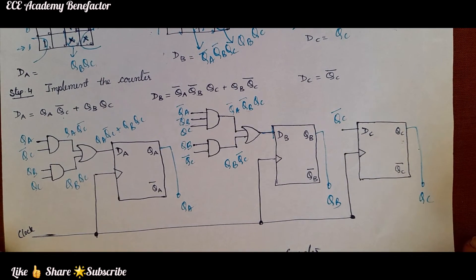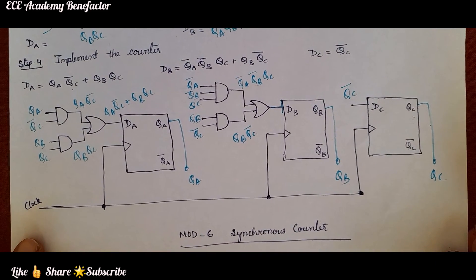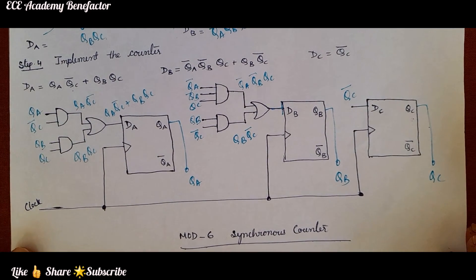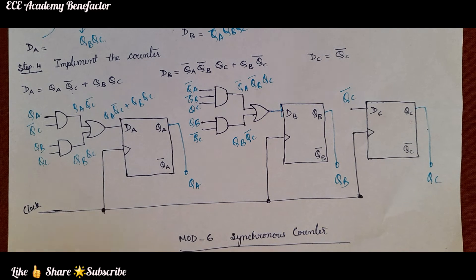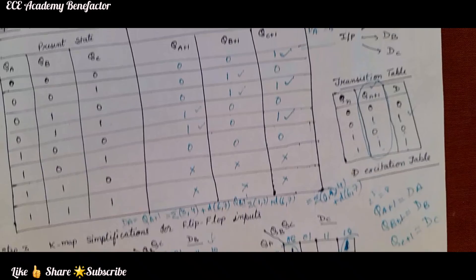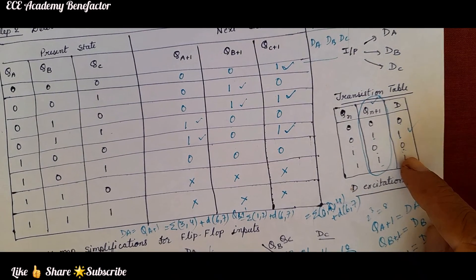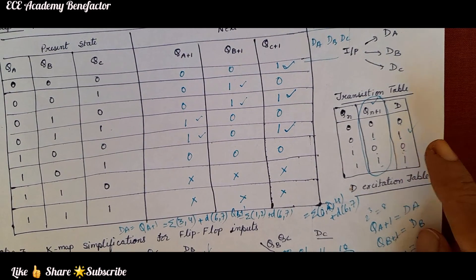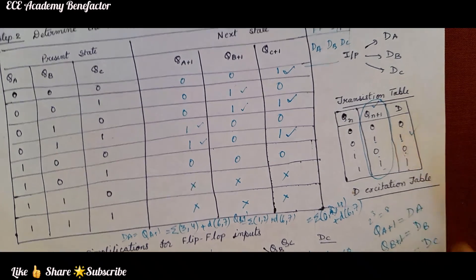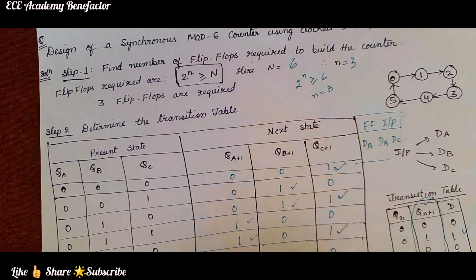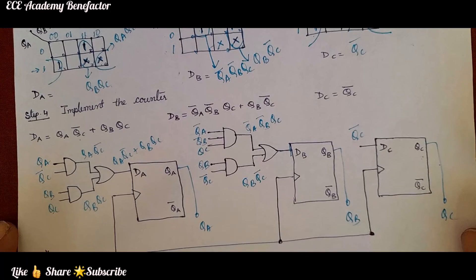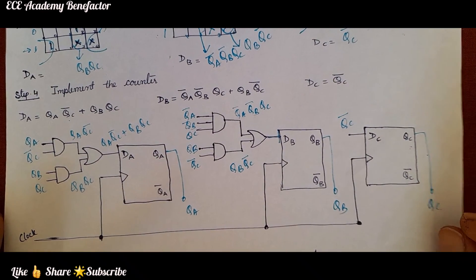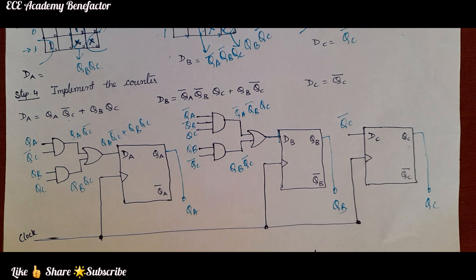In this way, we can easily draw the mod-6 synchronous counter using D flip-flops. An easy way to remember: for D flip-flops, whatever is the next state value, the same goes to the D input. This transition table property is very important. Based on the state diagram, we derived the present state and next state. I hope you understood the class — if you have any queries, post in the comment section. Thank you, good luck students.